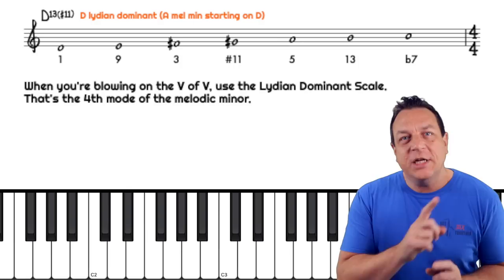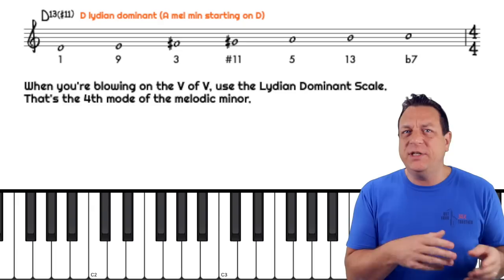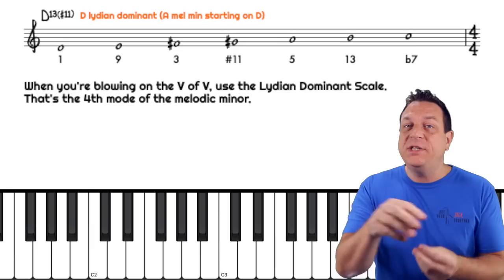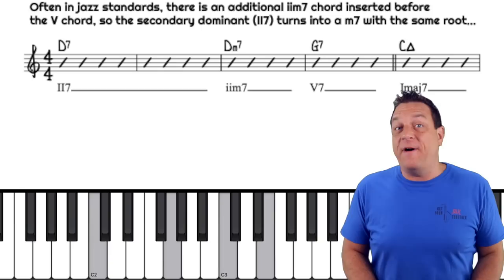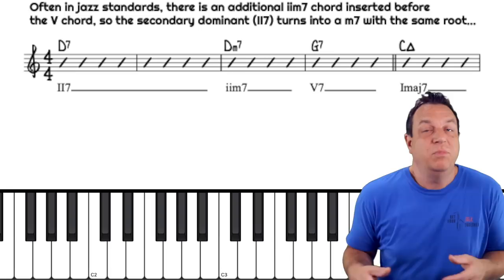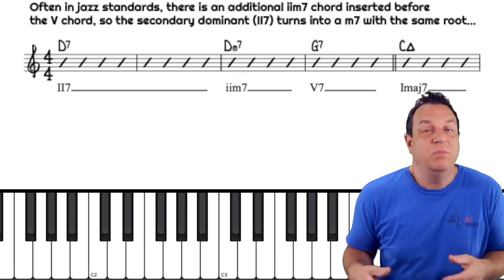In a jazz context, the five-chord of the key is usually preceded by a two-chord, meaning your secondary dominant will turn into a minor seven chord with the same root. So in C, your five of five — your secondary dominant — is D7. This goes to D minor seven, then G7, and finally home to C.